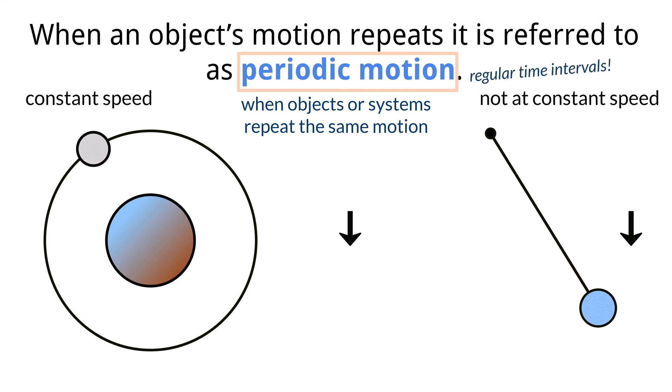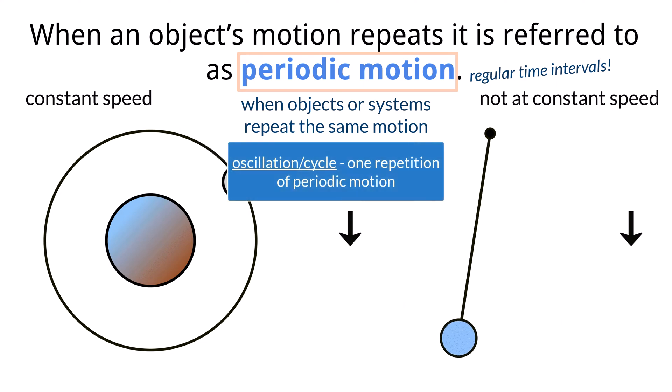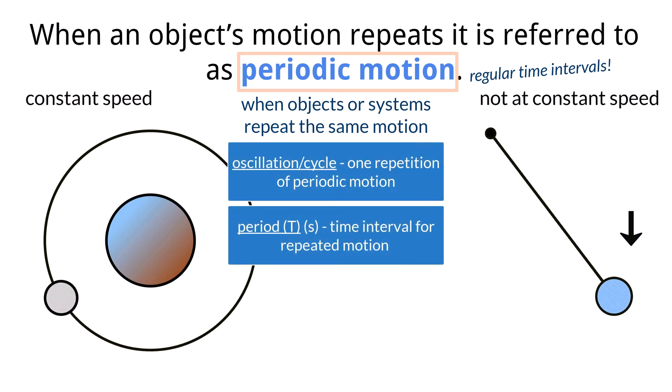And each repetition of the motion is called an oscillation. The time interval that a motion repeats over is called the period. It is denoted by a capital T, as it is a specific length of time.